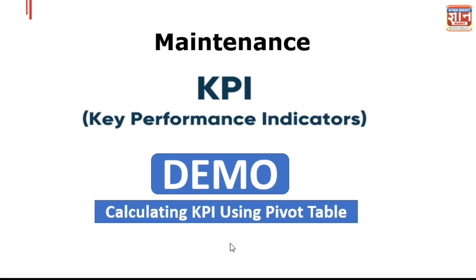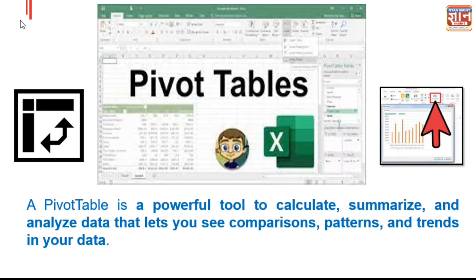Now we will go and see how to calculate quickly using pivot table — your MTTR and your KPIs. But before that, what is a pivot table? A pivot table is a powerful tool to calculate, summarize, and analyze data. It lets you see comparisons, patterns, and trends in your data. We will use pivot table to summarize the data and then do further calculations. I'll show you this quick demo.